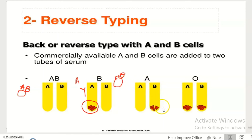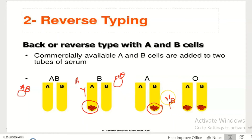If you see agglutination in the B tube, it means the patient has B antibody in their serum. As the patient has B antibody in their serum, it means the patient has A antigen on its RBCs and the patient is group A.